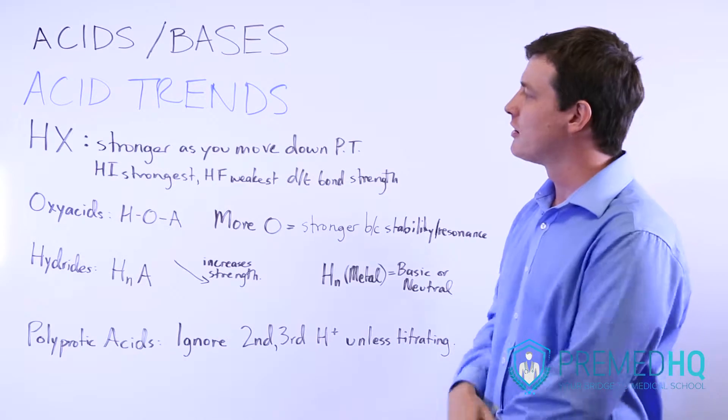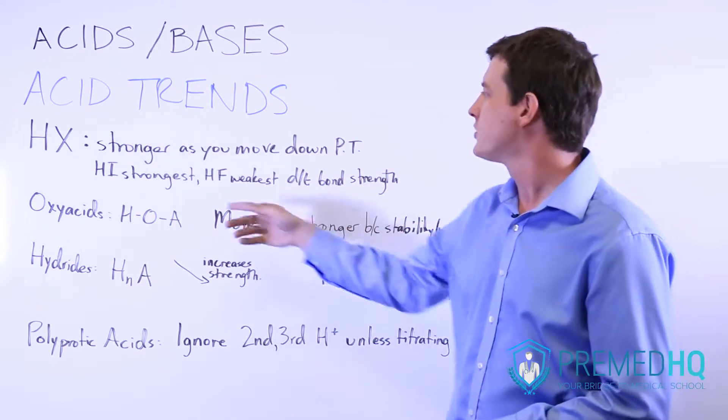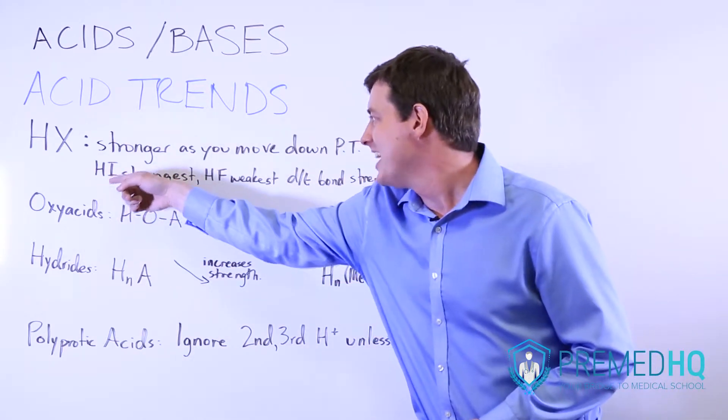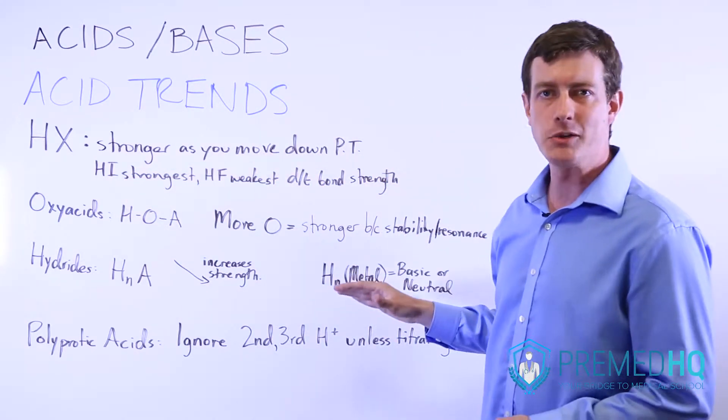Those get stronger as you move down the periodic table. So when you get to hydroiodic acid, HI, that is the strongest of all the halo acids.